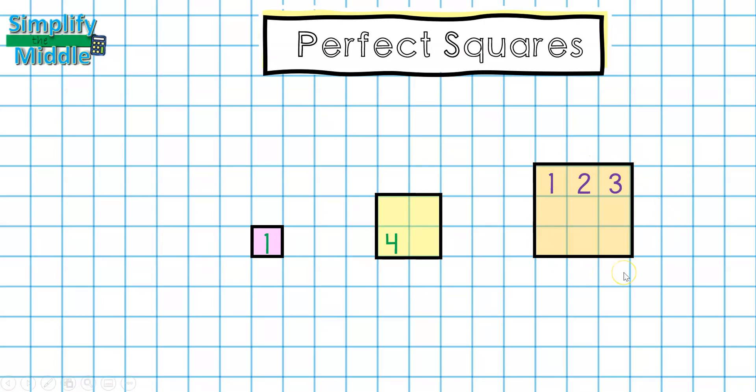Over here on our orange box, we've already counted out a length of 3, and we see we also have a width of 3. Inside this square, we can see that we have 1, 2, 3, 4, 5, 6, 7, 8, 9 boxes. So here, 9 is our perfect square.